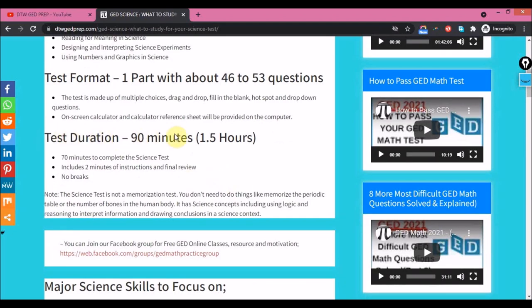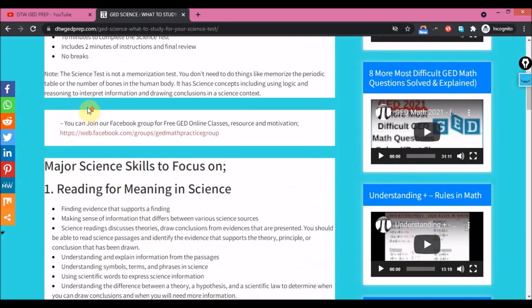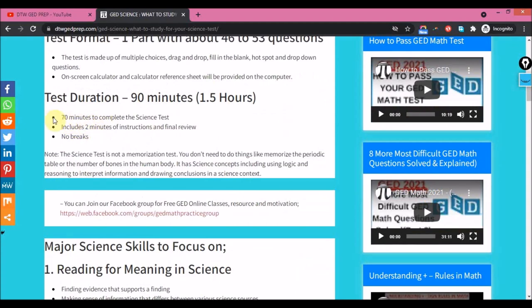Here you have the test duration as I said is 90 minutes. This 70 minutes is wrong - this is an error. It's your Social Studies that's 70 minutes, this is 90 minutes. Don't worry, I would edit the post later on. Also note that the Science test is not a memorization test, so you don't really need to bother about memorizing the periodic table or the number of bones in the human body.